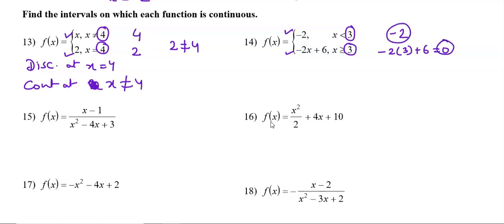Because -2 ≠ 0, this function is discontinuous at x = 3. So it is continuous at all values before 3 and all values after 3 — that is, at x ≠ 3.